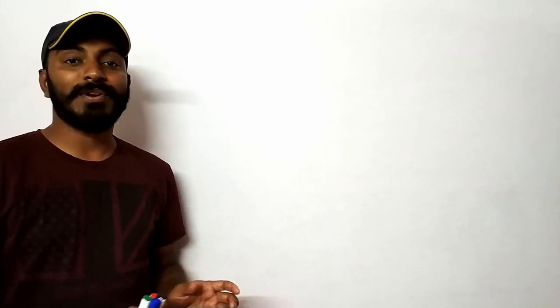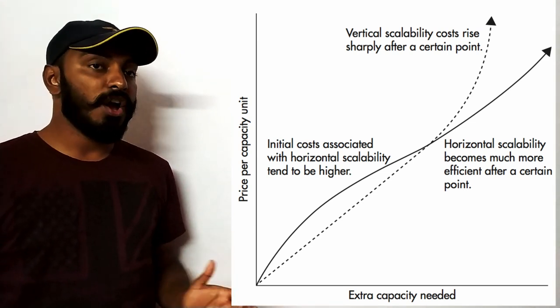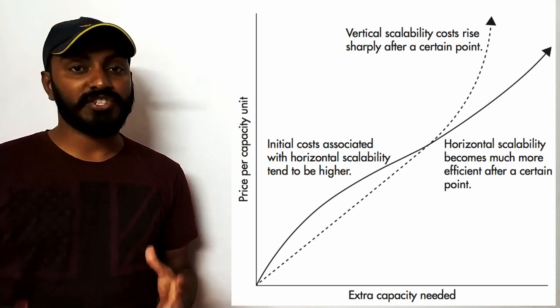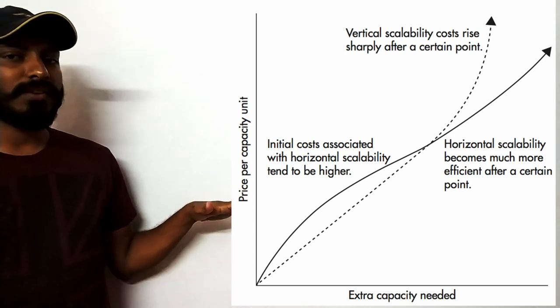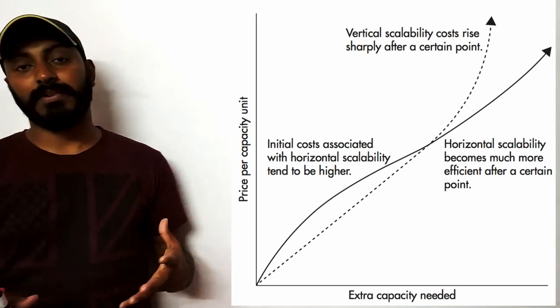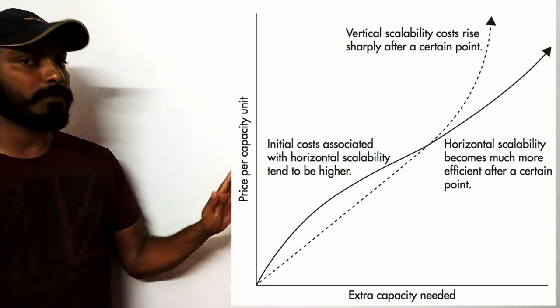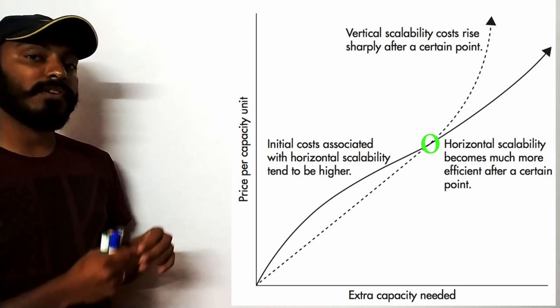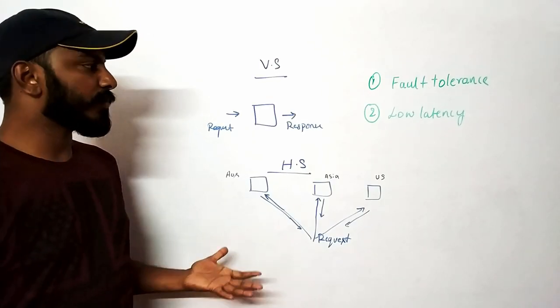You might think vertical scaling is more cost-effective, but horizontal scaling requires shelling out more money — kind of true for the initial days. But on a long run, especially when you're getting more traffic, horizontal scaling actually saves a lot of money. Looking at the graph, initially vertical scaling looks profitable and horizontal scaling needs more investment, but after the breaking point you actually save a lot of money with horizontal scaling.